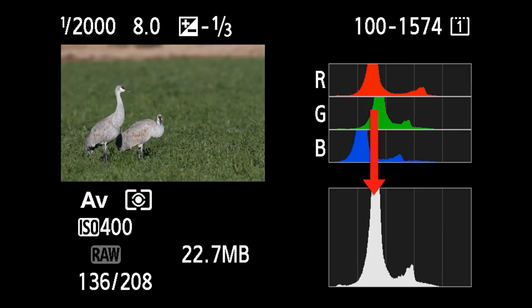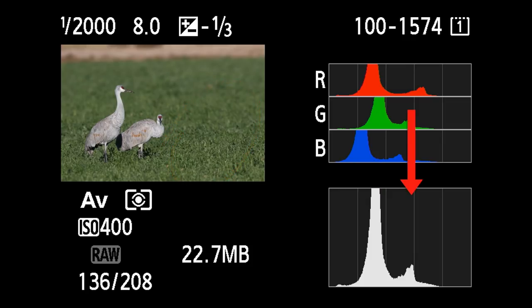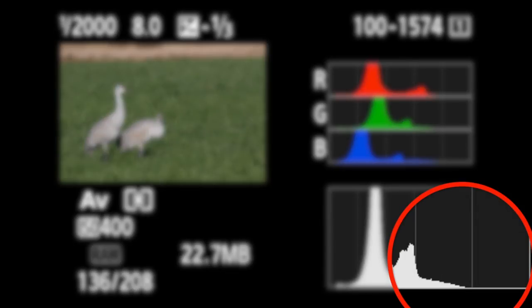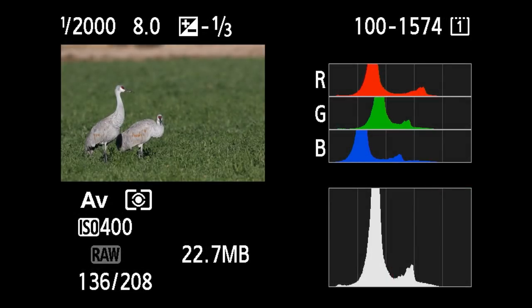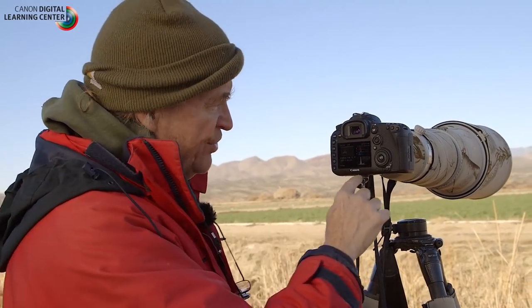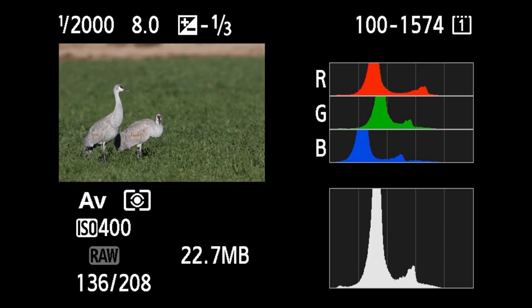Dark tones are to the left, and then there's a small hump representing the gray of the two cranes, with a smattering of data ending in the fourth box. You might say, 'You taught us to put data in the fifth box!' — but the problem is that the base of the crane's neck is very white and such an insignificant part of the image that you won't really see it in the histogram. I call it the lying histogram — when it looks like it's too far to the left.